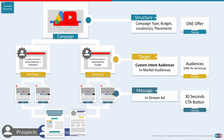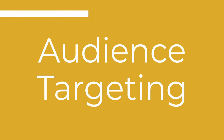Jumping over to our diagram — at the very top, what we've just done is set up our campaign: our locations, our budget, and where we're going to allow our ads to run. Now we're coming down to the second level, our ad groups. This is where we tell Google who is actually going to see our ads.